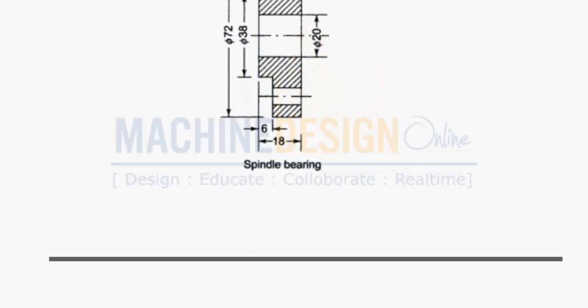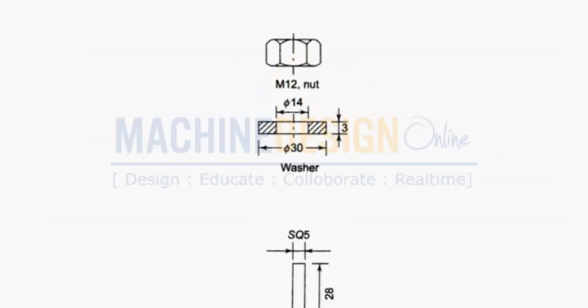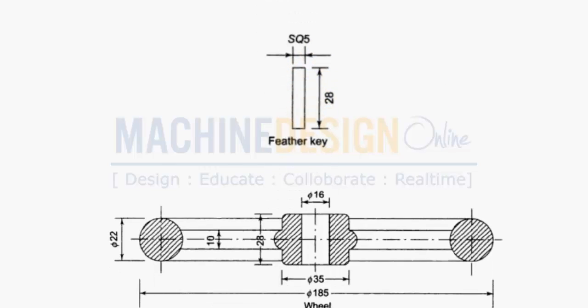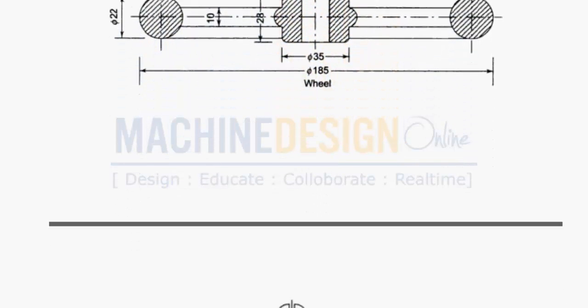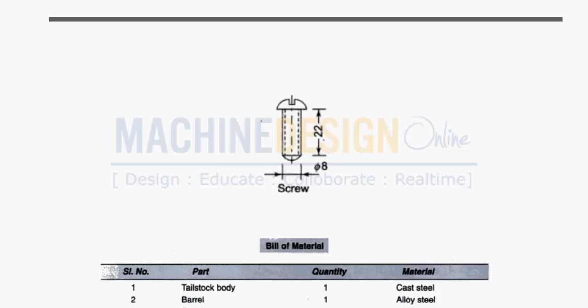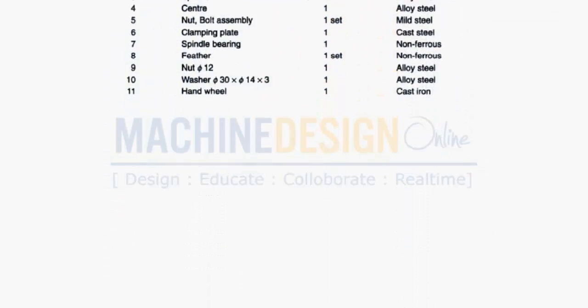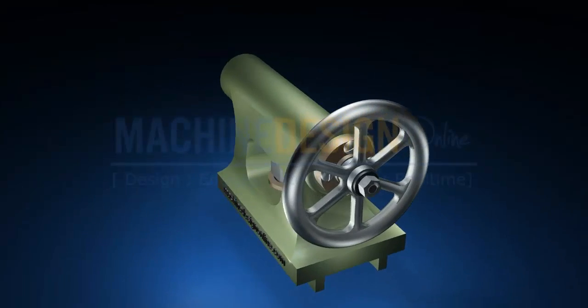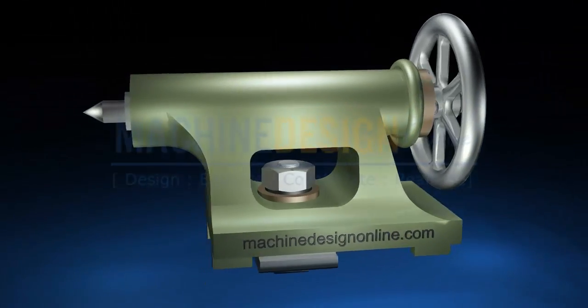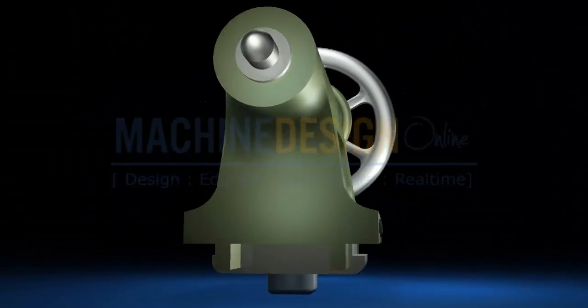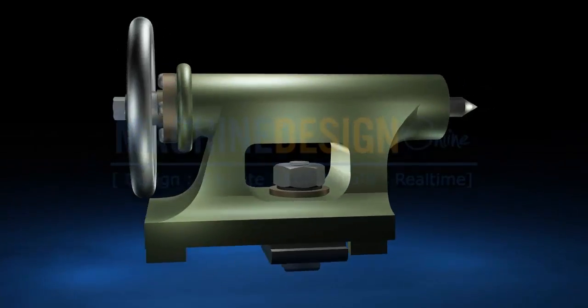With the help of this animation, this is how a tailstock actually appears. If we see it through a 360 degree view.